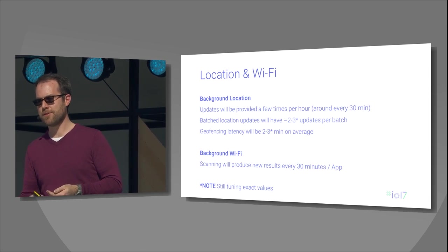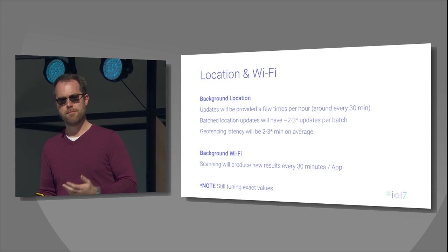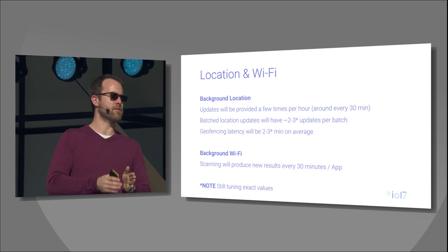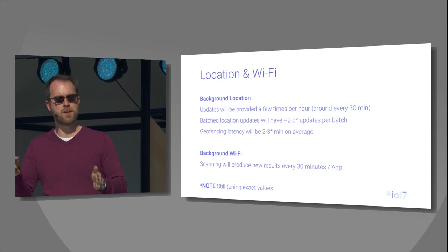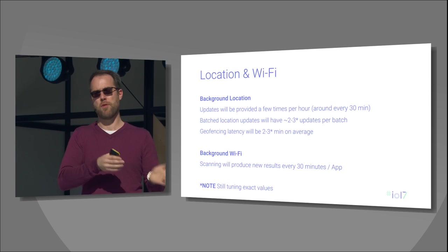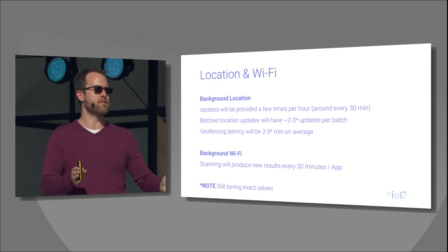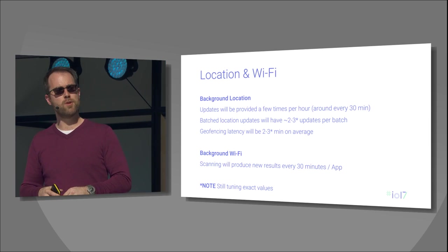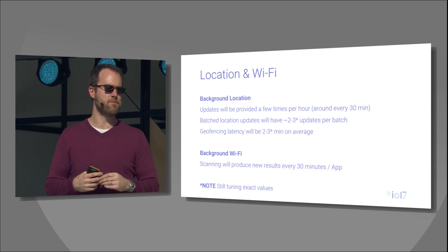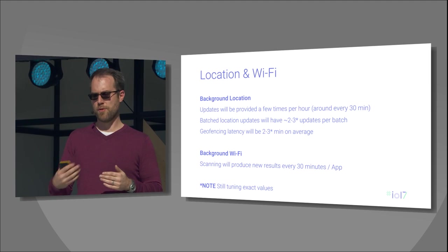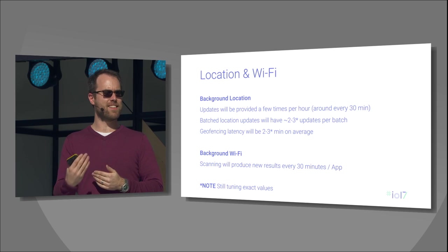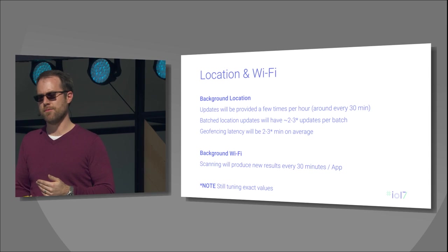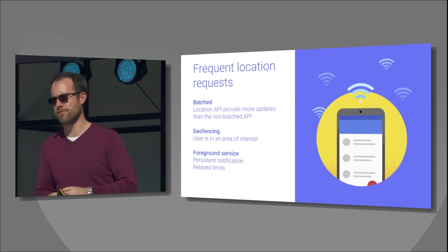The idea is not to say you can't run location in the background — we're still enabling that. But we're spacing it out to once every 30 minutes with an accuracy cycle of two to three minutes within those updates. The same thing applies with Wi-Fi: the API is a little different, but if you're querying the Wi-Fi scanning API too fast, you'll keep getting the same results — we won't actually do the query. Those are the two strategies we've taken for location and for Wi-Fi.